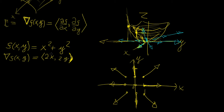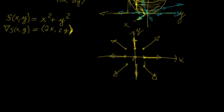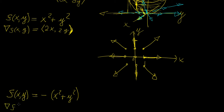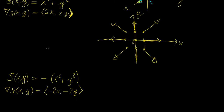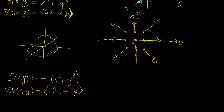Now let's consider a different case — an inverted paraboloid: f(x, y) = -x² - y². The gradient of this function gives us (-2x, -2y). This surface is concave down, continuing to infinity in all directions.